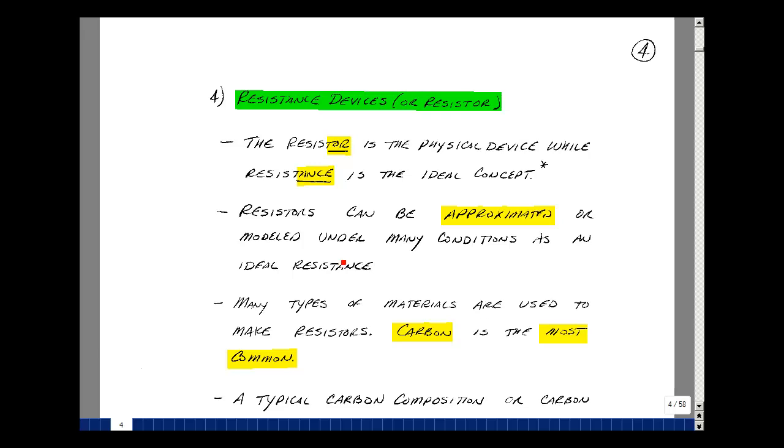Resistors can be approximated under many conditions as ideal resistances. All types of materials can be used to make resistors, but carbon is probably the most common.